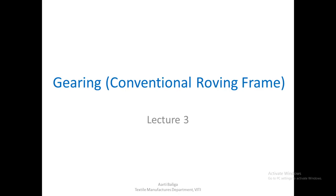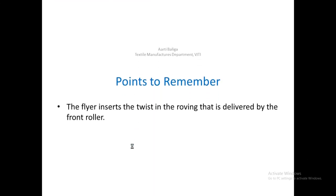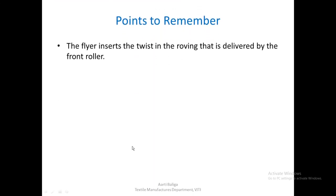Hello, today we shall see the gearing on the conventional roving frame, how it used to work and how the bobbin is driven. Let us first revise some points already discussed in earlier lectures. The first point is that the flyer inserts the twist in the roving that is delivered by the front roller.